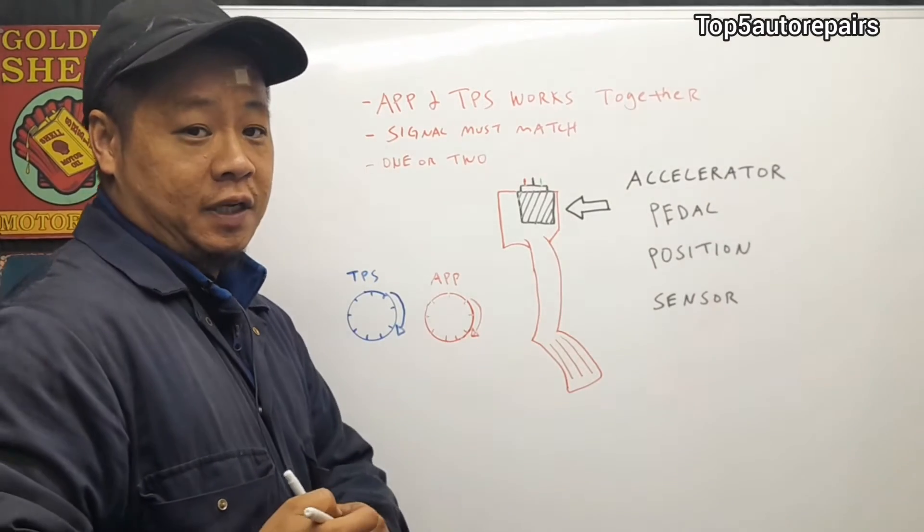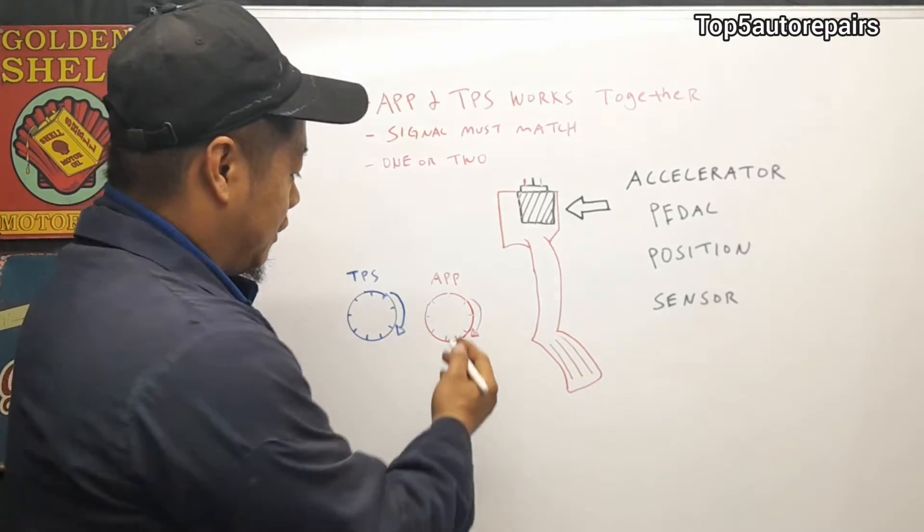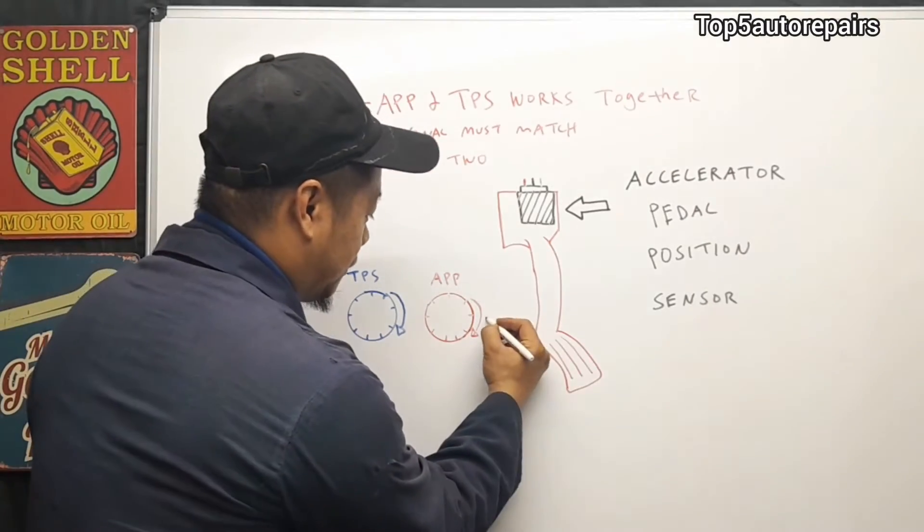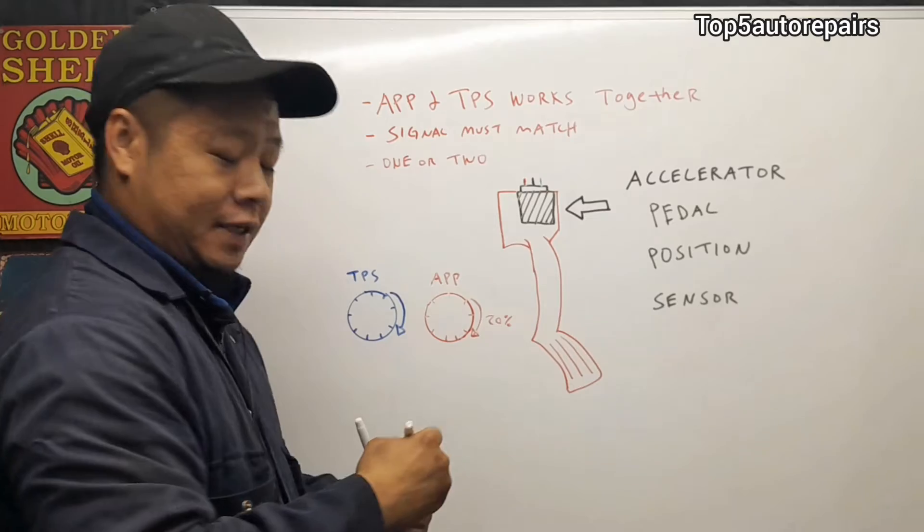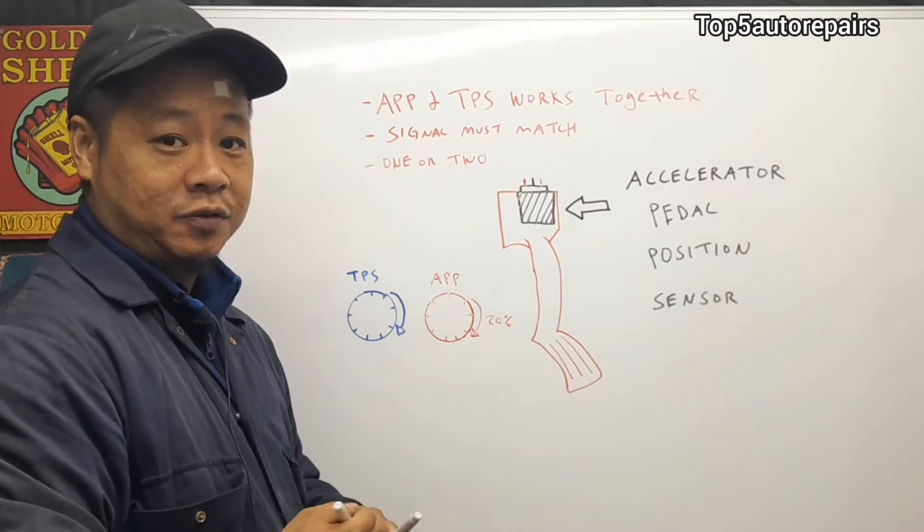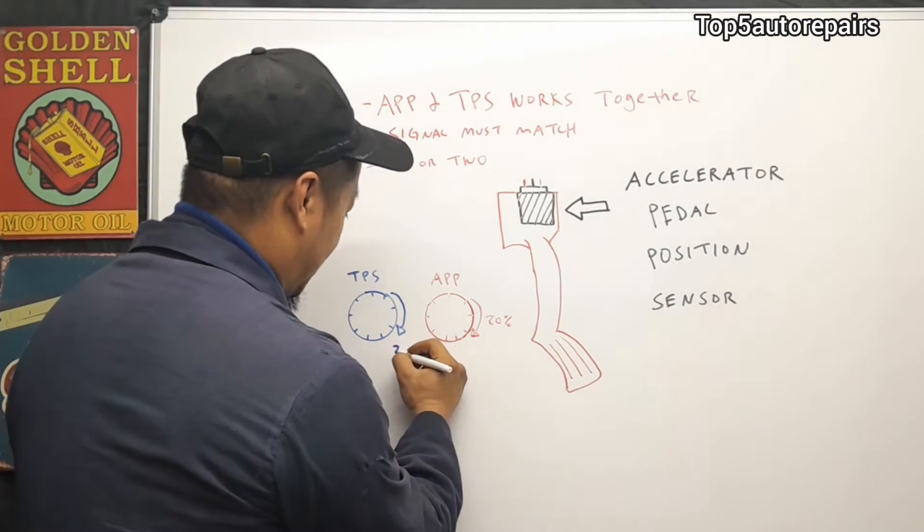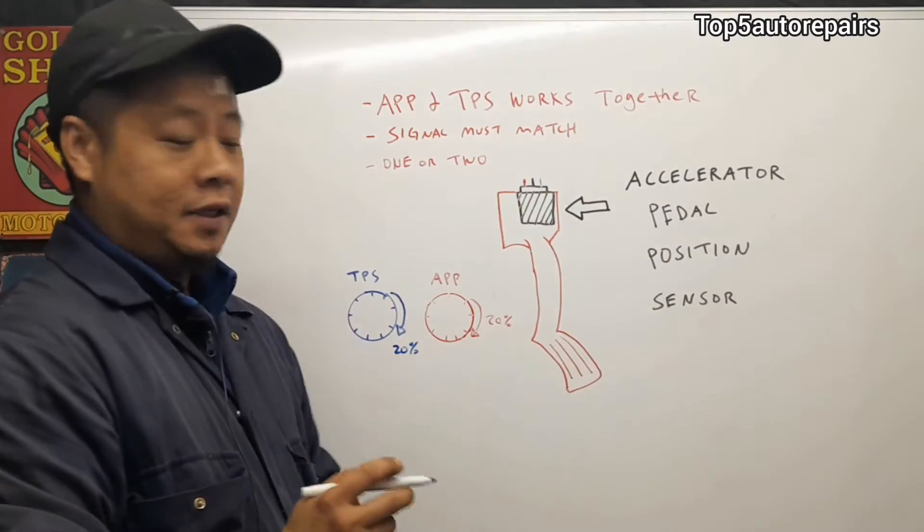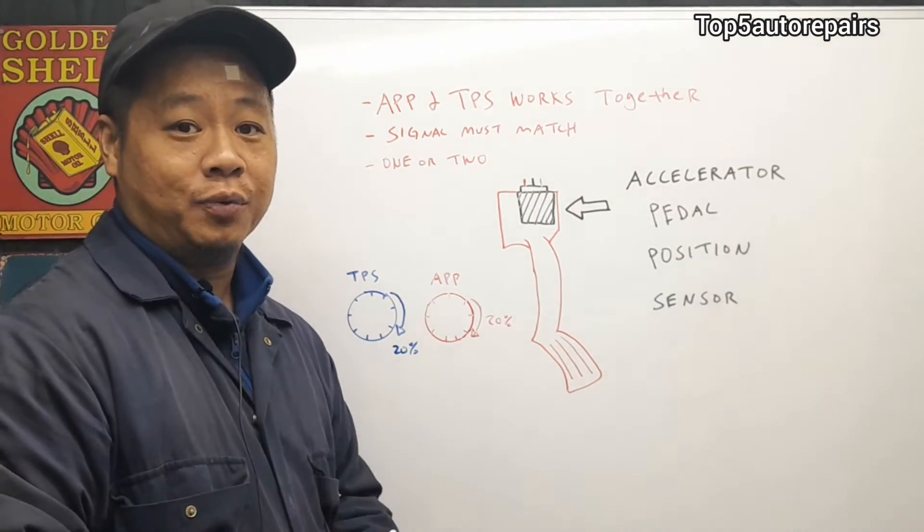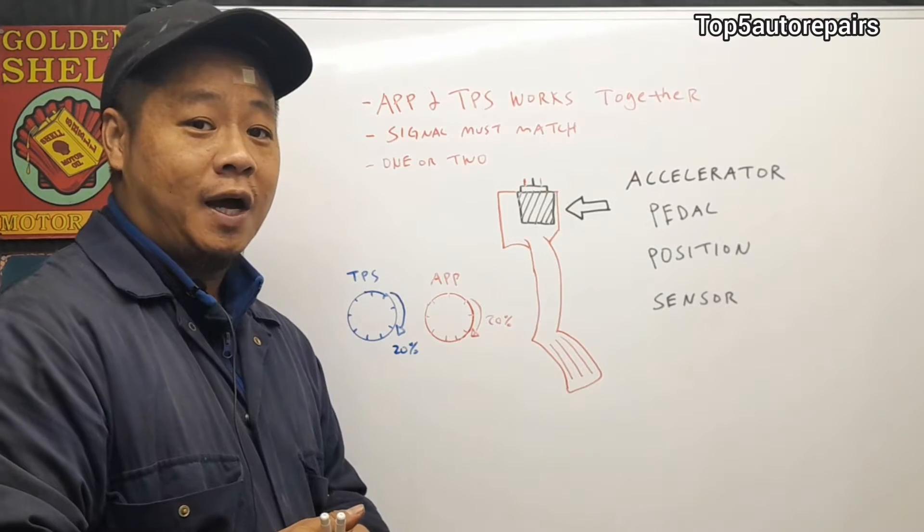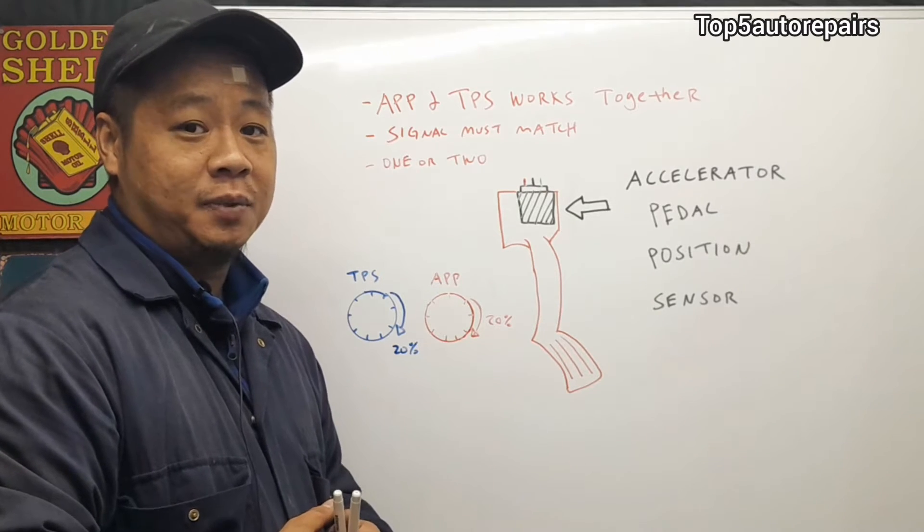Here's an example that the signal must match. Let's say you step on the gas pedal about 20%. That means the TPS throttle angle must also open up about 20%. These two signals must match when going to the computer. If the signal does not match, you're going to have some issues with the APP sensor.